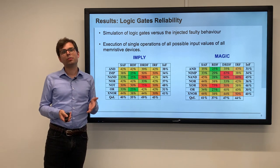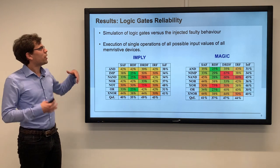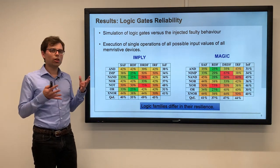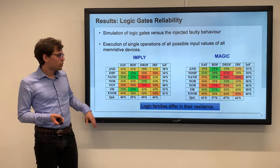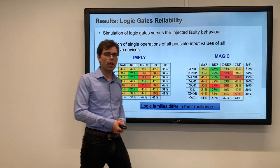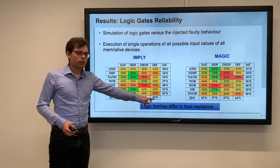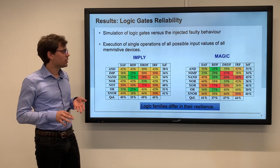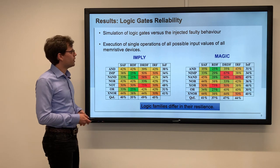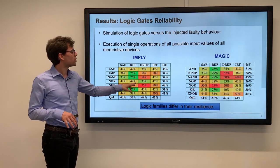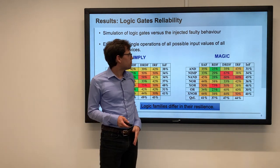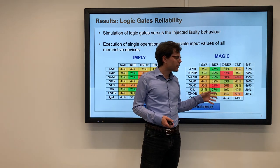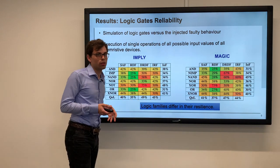We took all different binary values for all operations, mapped them to every possible memristor configuration physically, averaged over the results, injected individual faults in each memristor, and observed what happens. For IMPLY and MAGIC, the key takeaways are: first, the logic families differ in their resilience to faults. Some quality of logic results are extremely close to 50 percent, which is essentially like flipping a coin — not good. Certain logic operations with certain errors completely break the system with fault rates above 50 percent. The XNOR operation has relatively low fault rate with acceptable resilience, but overall the numbers are quite high and it doesn't look good for logic in memory for BNNs.